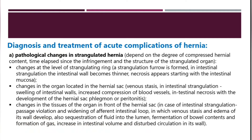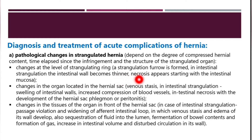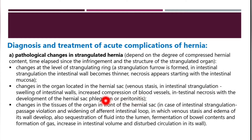Pathological changes in strangulated hernia depend on the degree of compression of hernia contents, time elapsed since infringement, and the structure of the strangulated organ. At the level of the strangulation ring, a strangulation furrow is formed; in intestinal strangulation the intestinal wall becomes thinner and necrosis appears starting with the intestinal mucosa. Changes in the organ in the hernia sac include venous stasis, swelling of the intestinal walls, increased compression of blood vessels, and intestinal necrosis with development of hernia sac phlegmon or peritonitis.